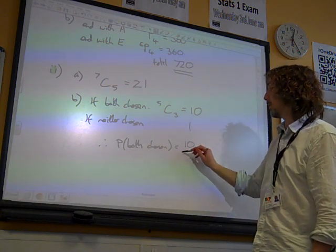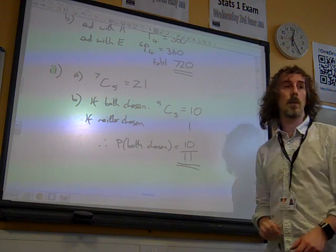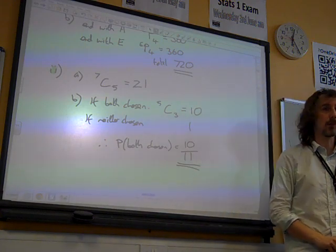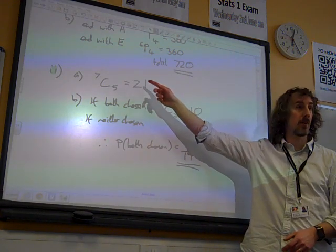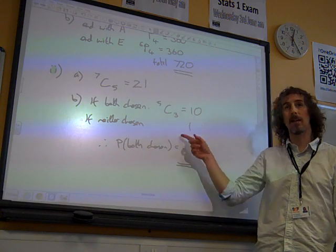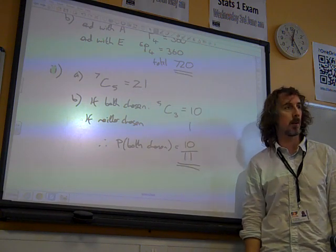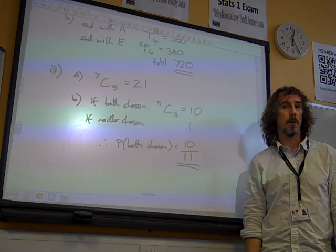And we want to know the probability of them both being chosen. And that is 10 out of the 11 scenarios that we're left with. Not 10 out of the 21 that we started with. Because we've narrowed it down to just these two possible things.